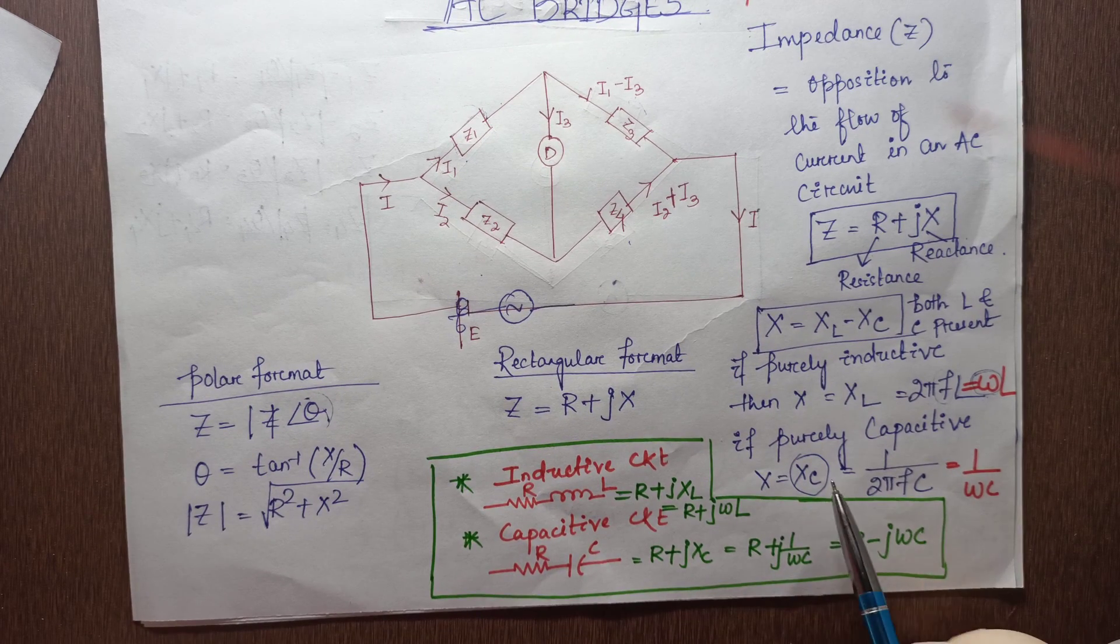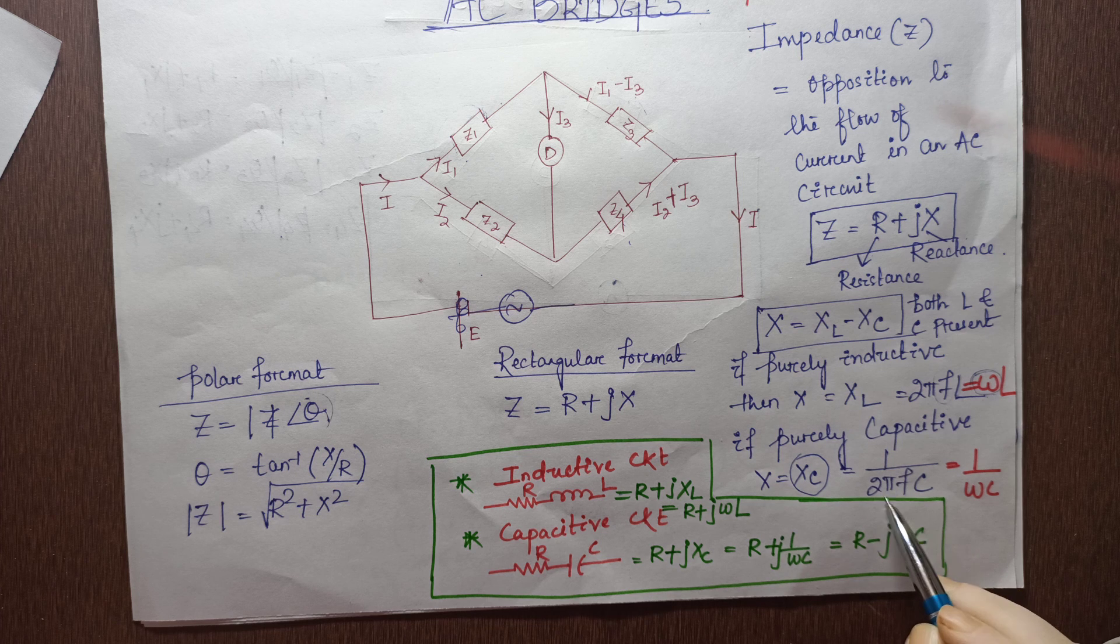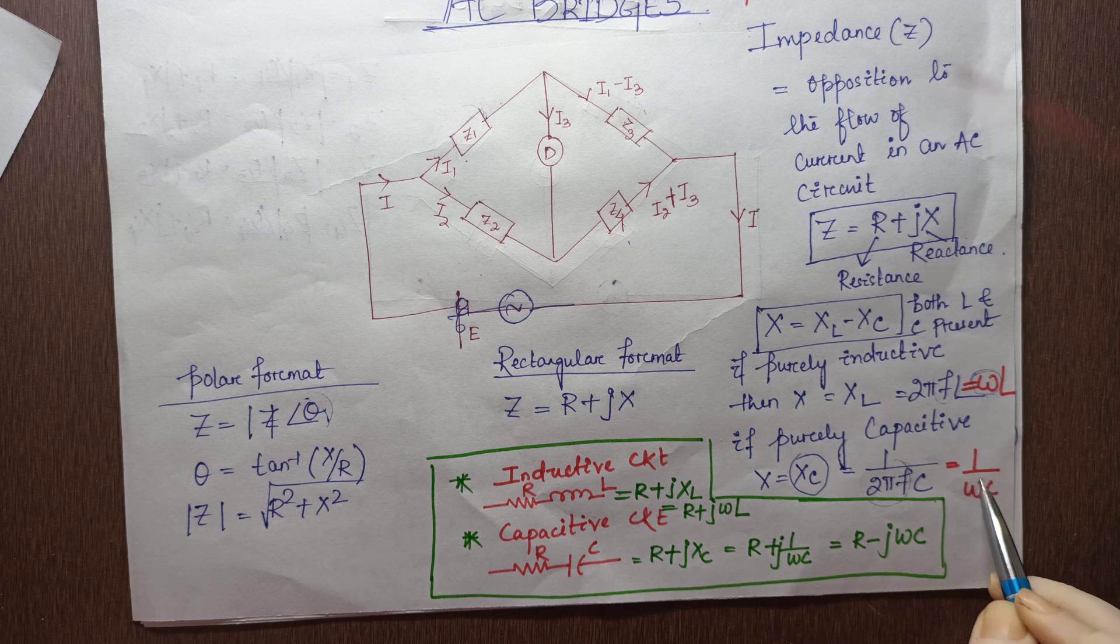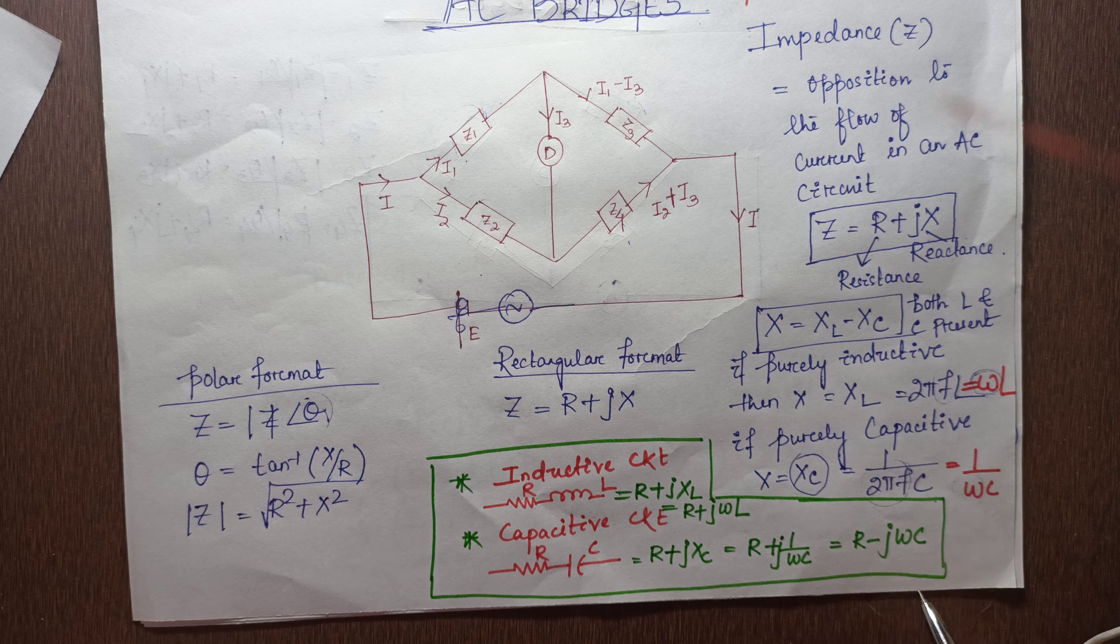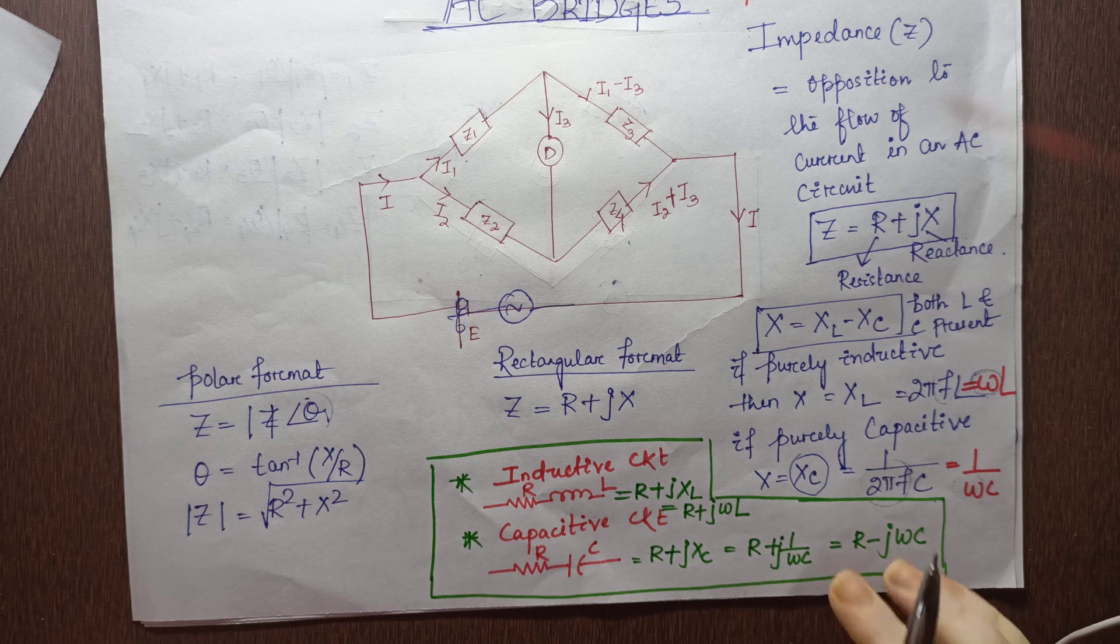Similarly, in a capacitive circuit, you have the formula 1/(2πFC), which is also written as 1/(ωC), where ω is the angular frequency.